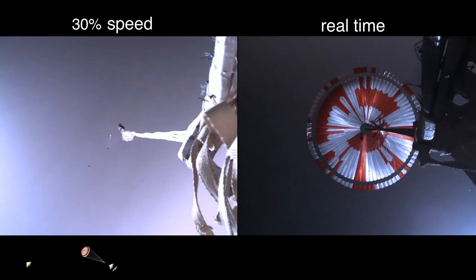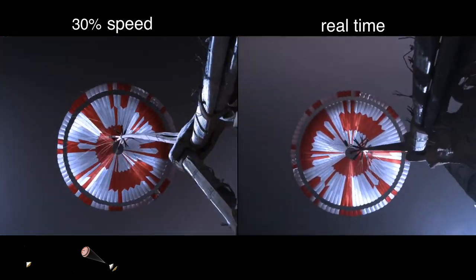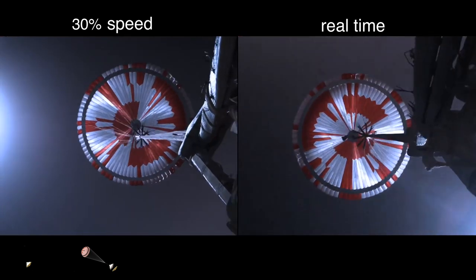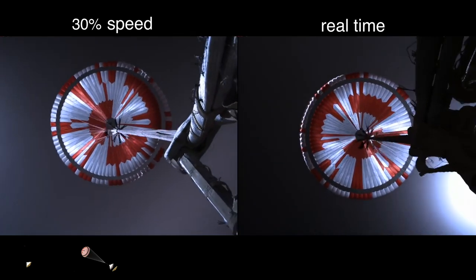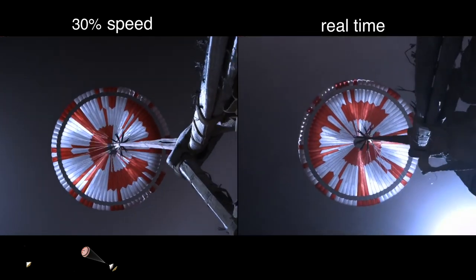Parachute indicates chute deployed. The navigation has confirmed that the parachute has deployed, and we are seeing significant deceleration in the velocity. Our current velocity is 440 meters per second at an altitude of about 12 kilometers from the surface of Mars.